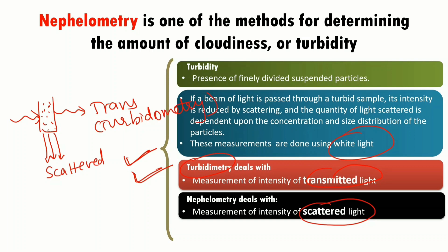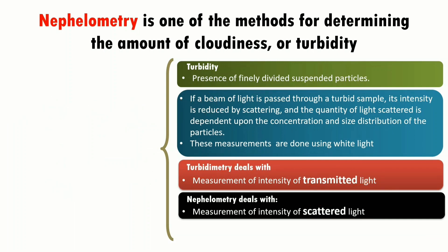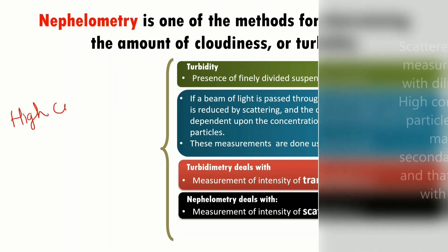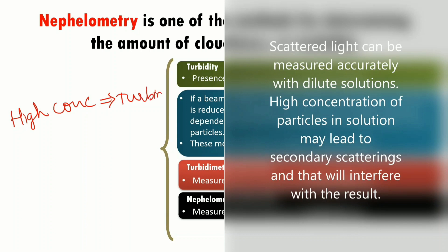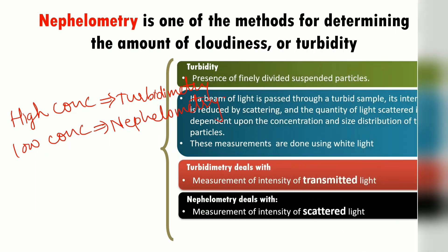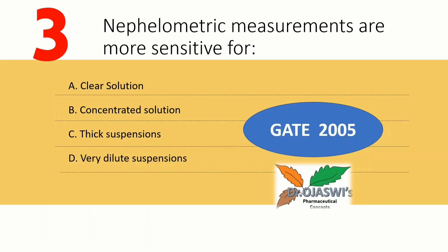When it comes to the choice of method — which method is to be used — that depends on the nature of the sample. If the sample is highly concentrated, we use turbidimetry. When the samples are low-concentration dilute solutions, we use nephilometry, which gives accurate results for dilute solutions. Nephilometric measurements are more sensitive for very dilute suspensions.